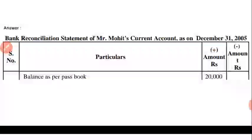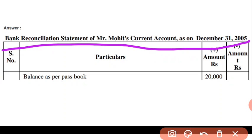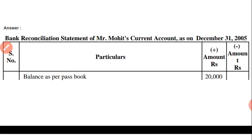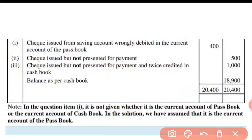First of all, prepare the format — write the heading: Bank Reconciliation Statement of Mr. Mohit, Current Account, as on 31 March 2005. First column: serial number, then particular, then plus amount, and then minus amount. Write balance as per passbook: 20,000. Credit balance diya tha — cashbook se hota to minus mein likhte, but it's passbook, isliye plus mein likha jayega.